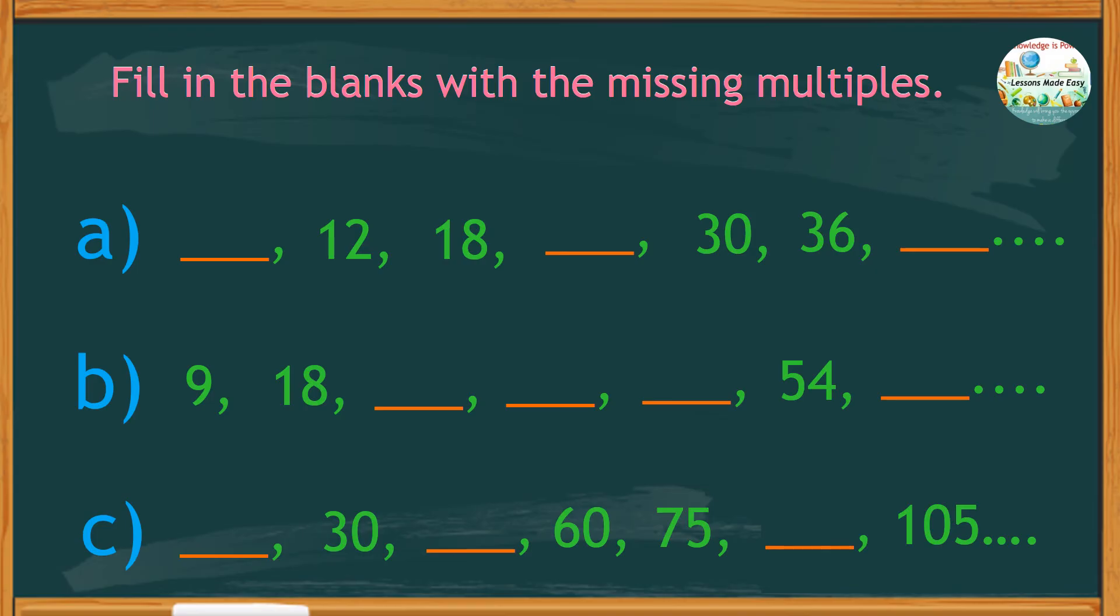For set A, the missing multiples are 6, 24, and 42. From the clue, it is clear that this set shows the multiples of 6.